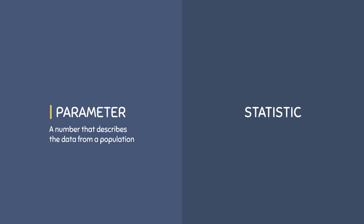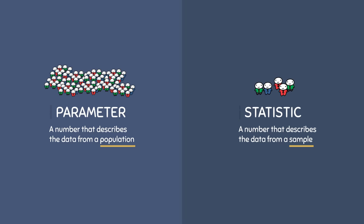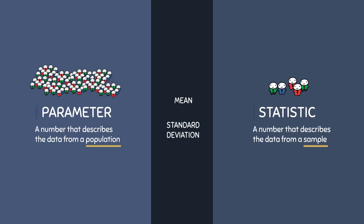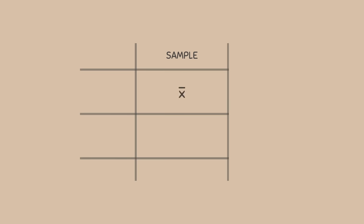A parameter is a number that describes the data from a population, whereas a statistic is a number that describes the data from a sample. Examples of parameters and statistics are the mean and standard deviation, but we have to be very careful with what symbols we use to represent these numbers. When dealing with a sample, we use X-bar for the sample mean and S for the sample standard deviation. These are statistics.